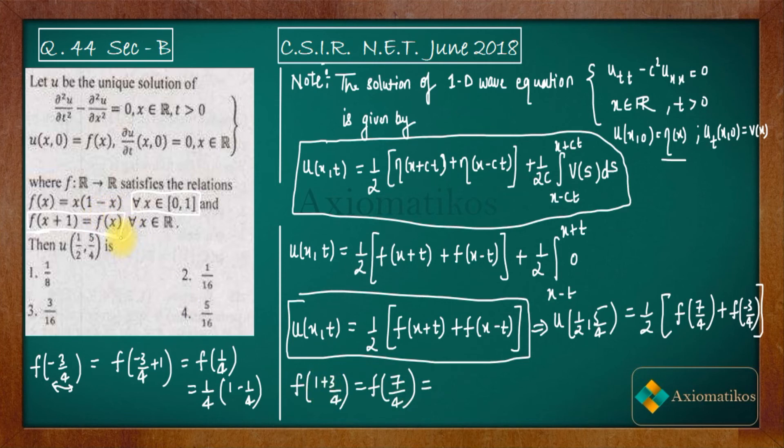So it is according to this thing it is equal to f of 3/4. f of x plus 1 is equal to f(x). So 1 plus x is x. So f of 3/4 what we are getting. Now it is less than 1. So we can apply this. So what we will get, 3/4, 1 minus 3/4. So you will get 1/4. So you are getting 3/16 from here. From here also you are getting 3/16.